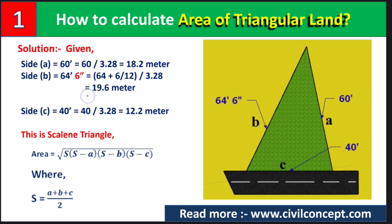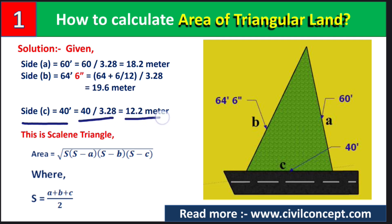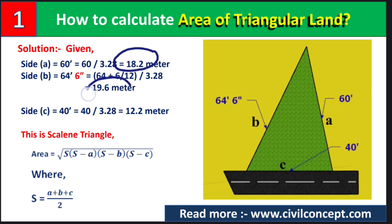After doing this conversion for side B we get almost 19.6 meters. Our third side is 40 feet, and converting it into meters we get almost 12.2 meters. Now we have calculated all three sides in meters: 18.2 m, 19.6 m, and 12.2 m.